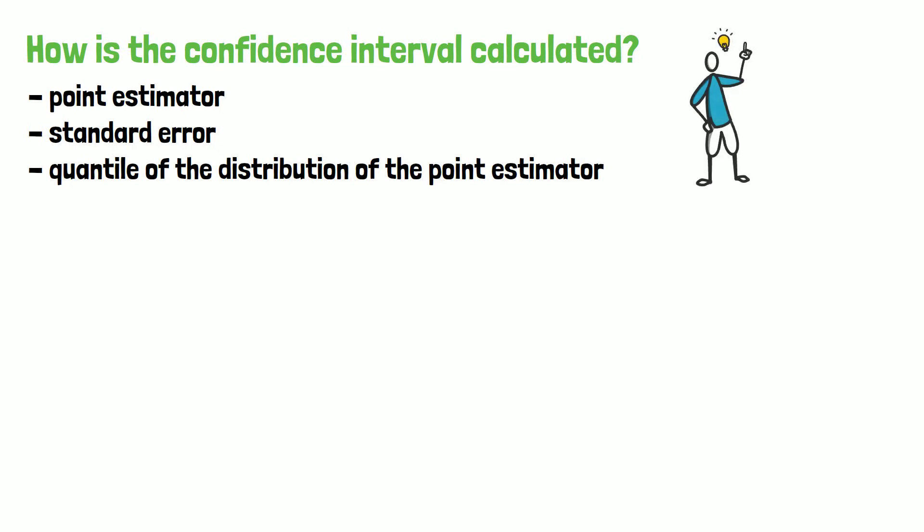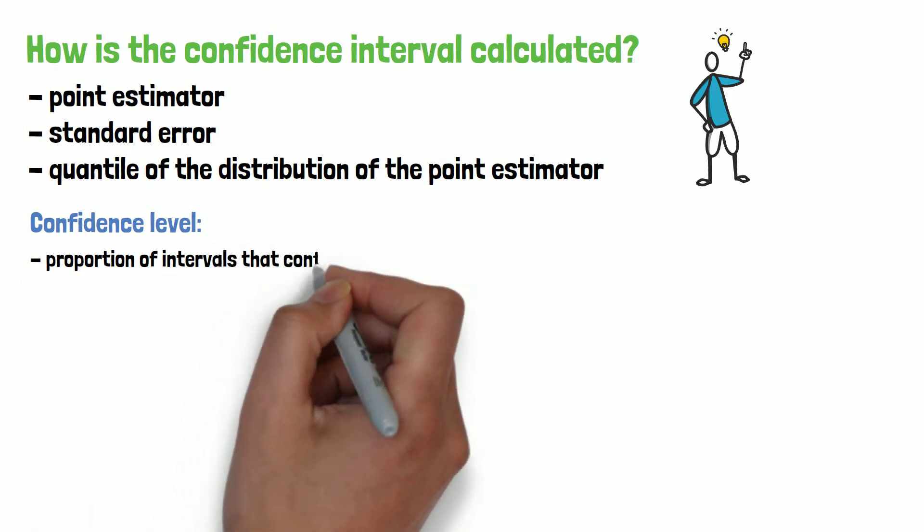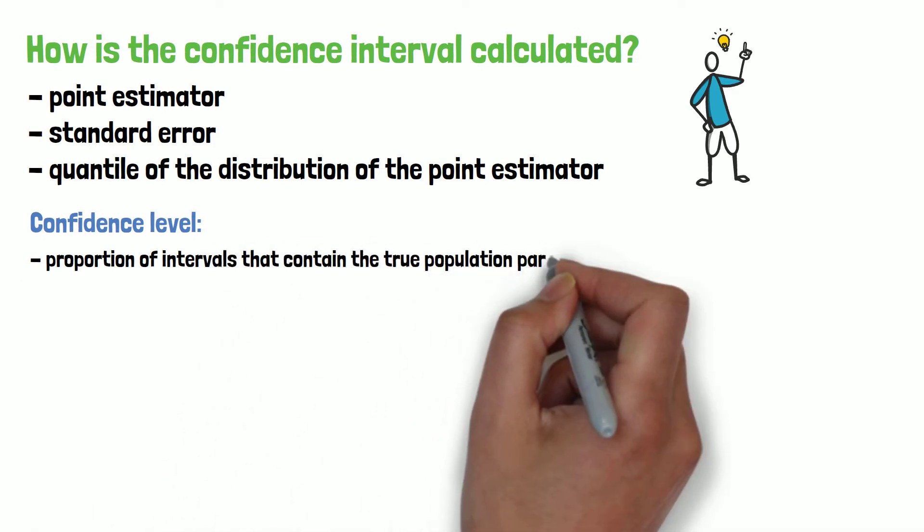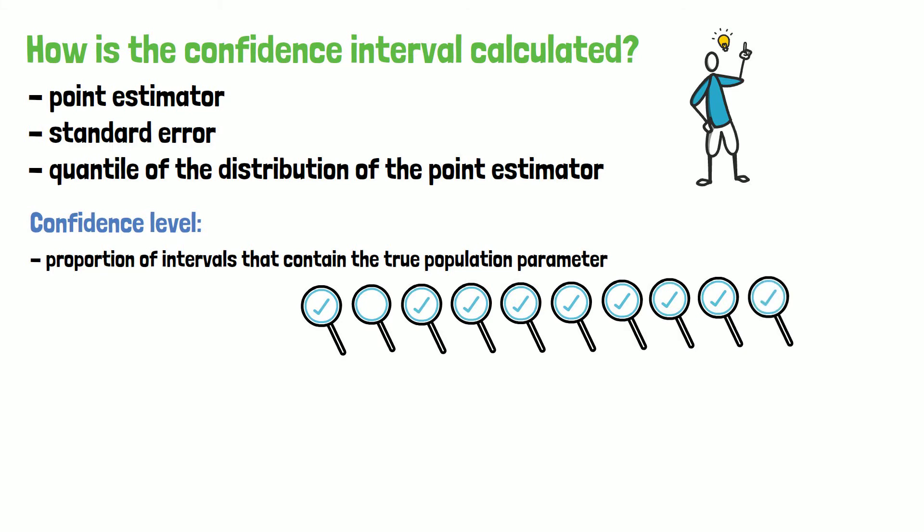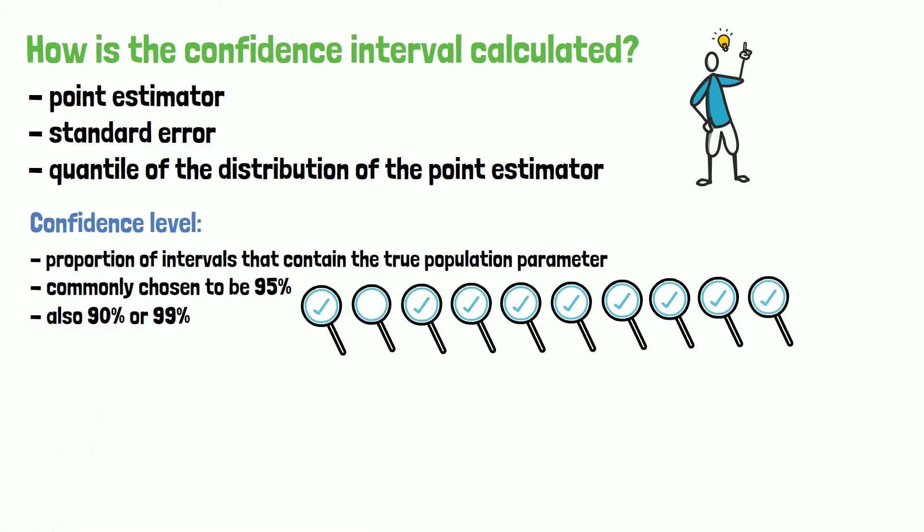Before a confidence interval is calculated, the confidence level must be determined. It is the proportion of intervals that contain the true population parameter of interest in a set of repeated sampling. It is commonly chosen to be 95%, but also 90 or 99%.